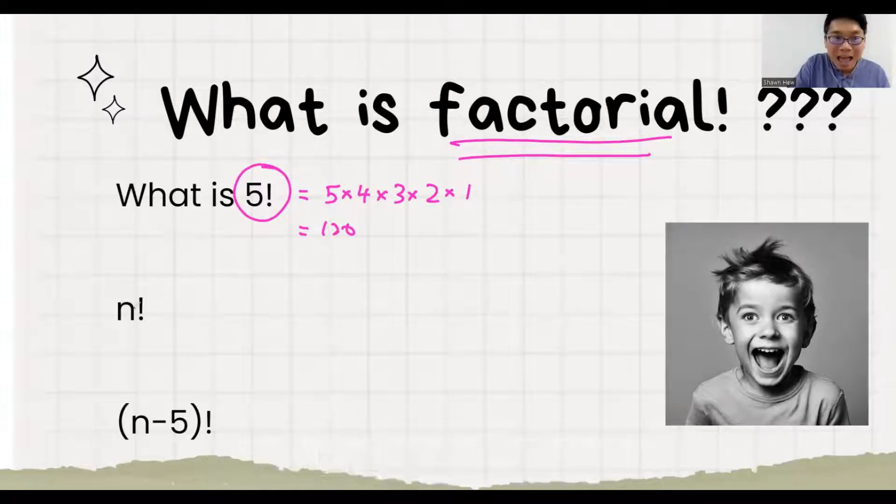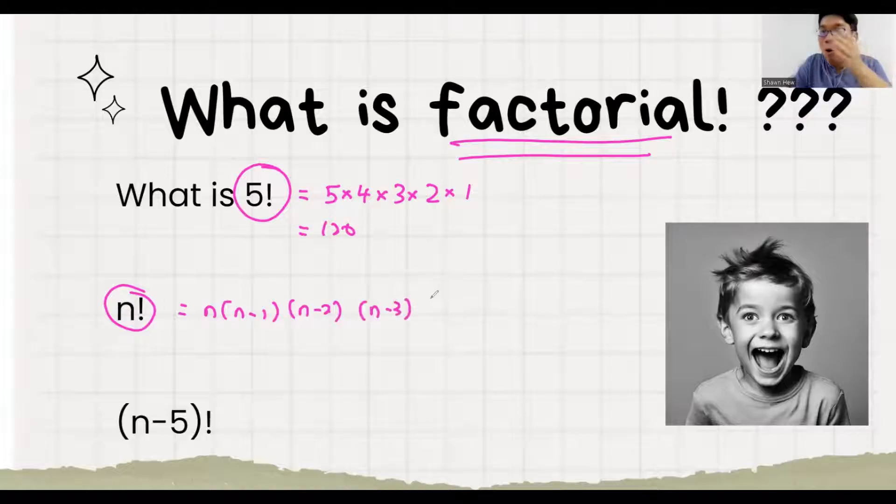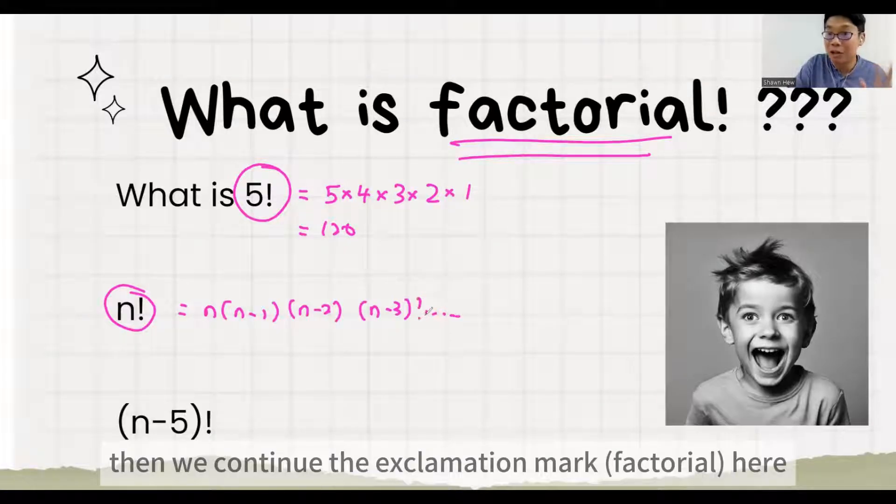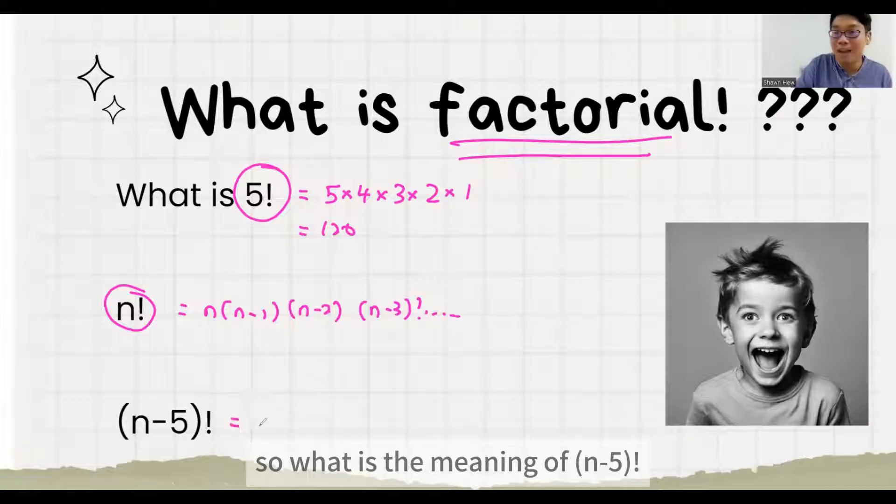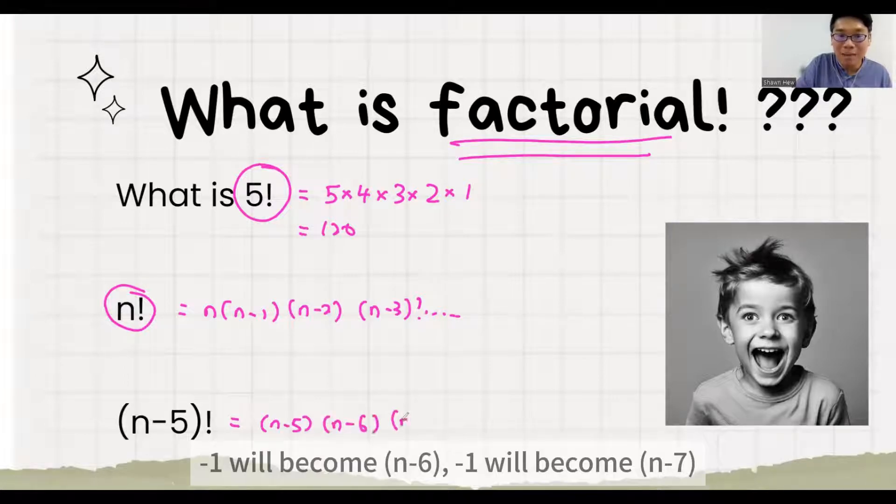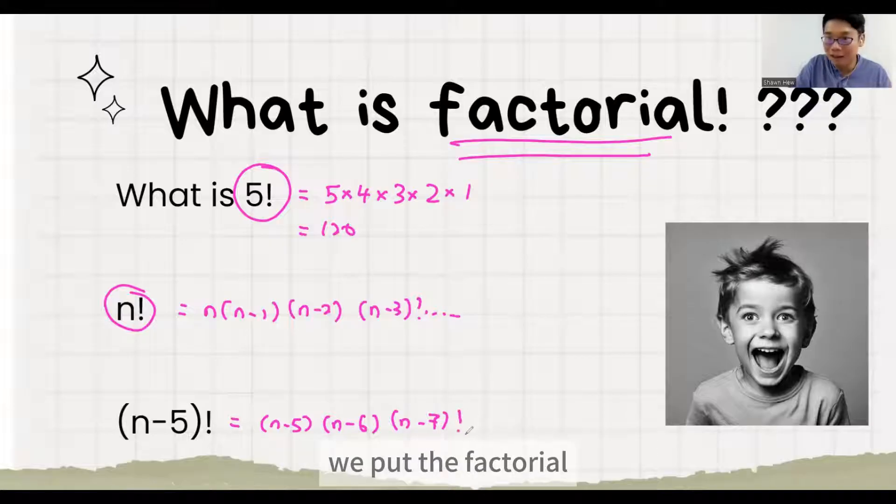So what is the meaning of n factorial? Which means we start from n, decrease by 1, decrease by 1, all the way until you get 1. And then if you only want to do right until n minus 3, then we continue the exclamation mark here. So what is the meaning of n minus 5 factorial? It's still the same. We start from n minus 5, minus 1 become n minus 6, minus 1 become n minus 7. If you want to stop here, we put the factorial.